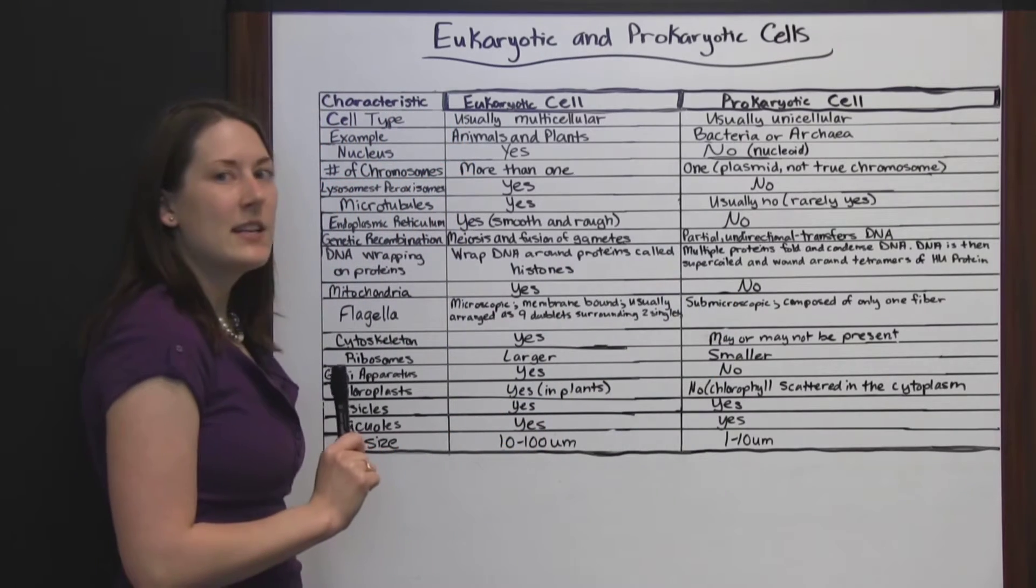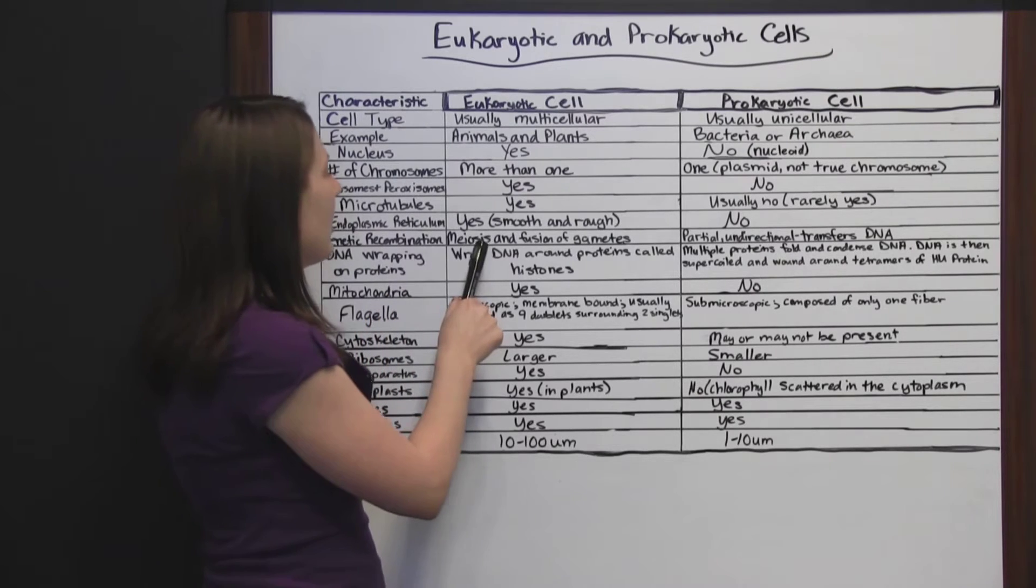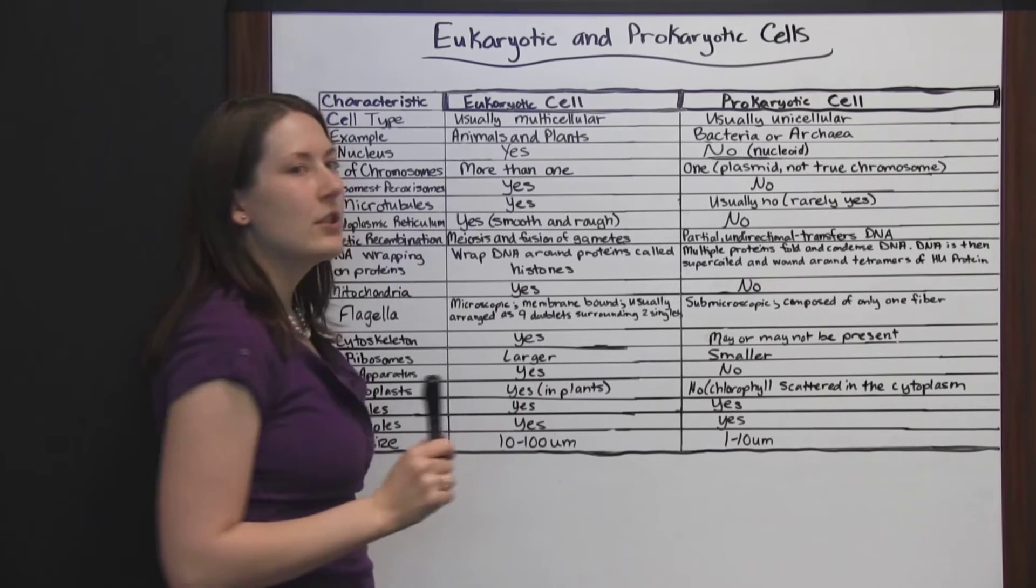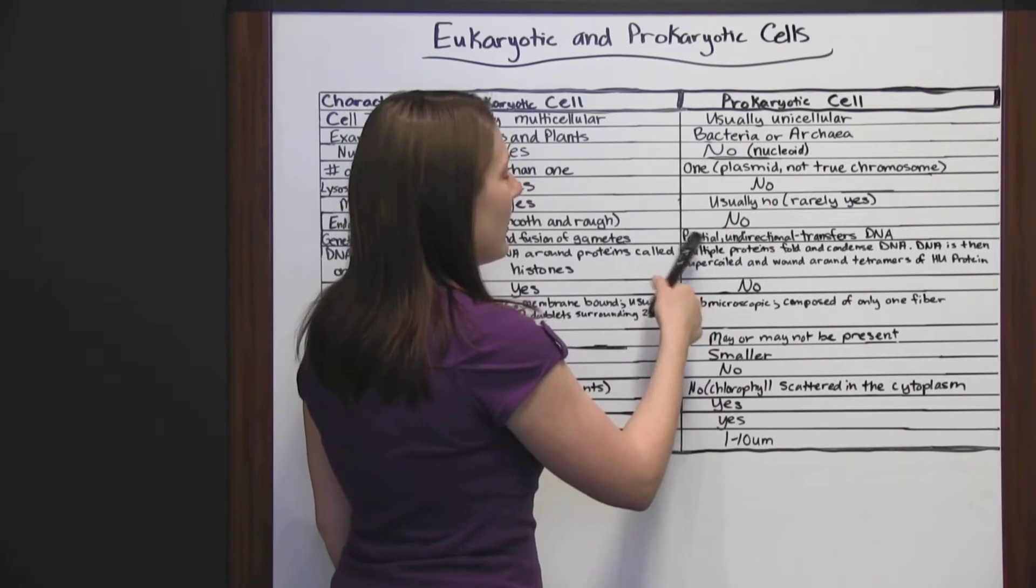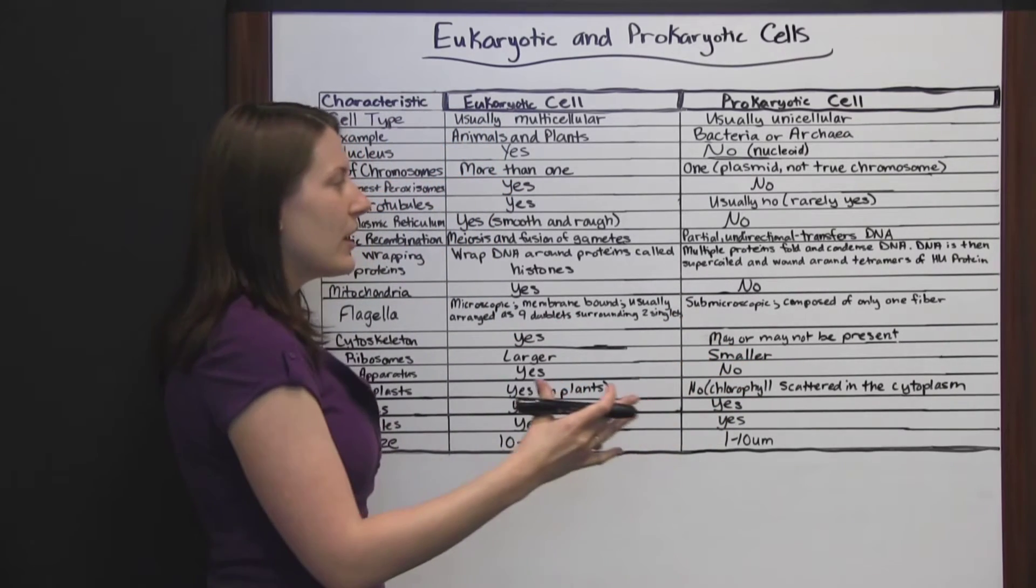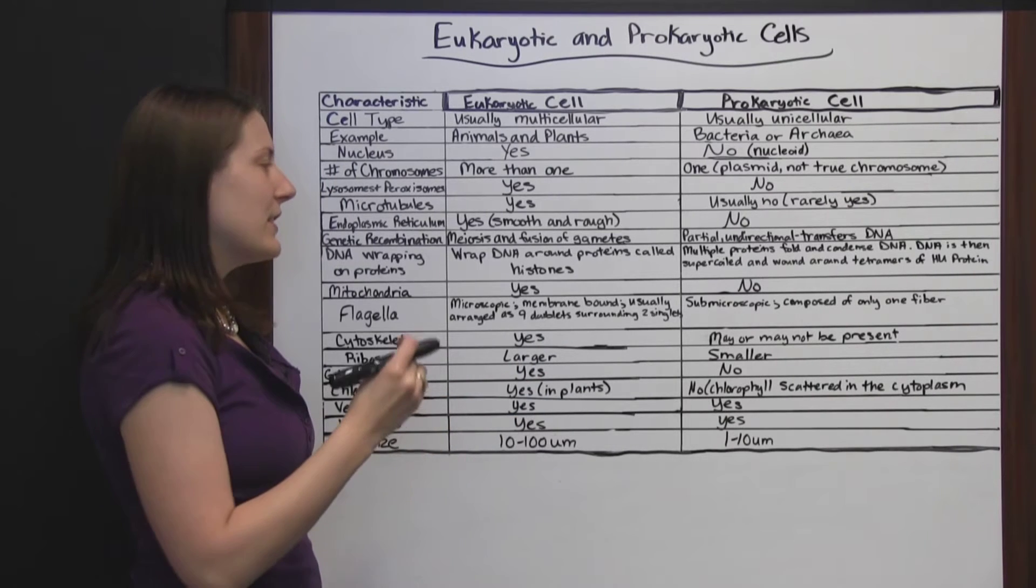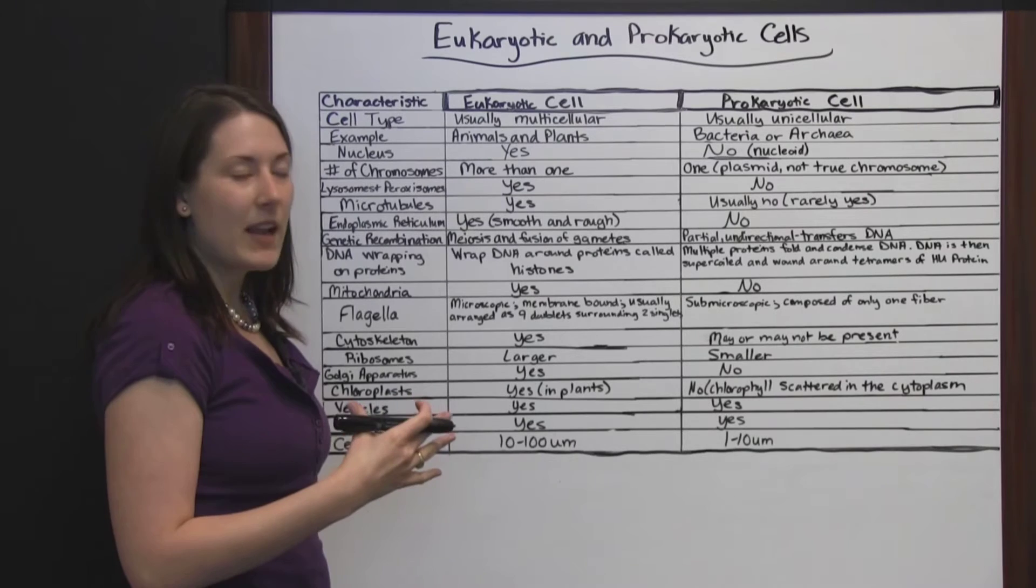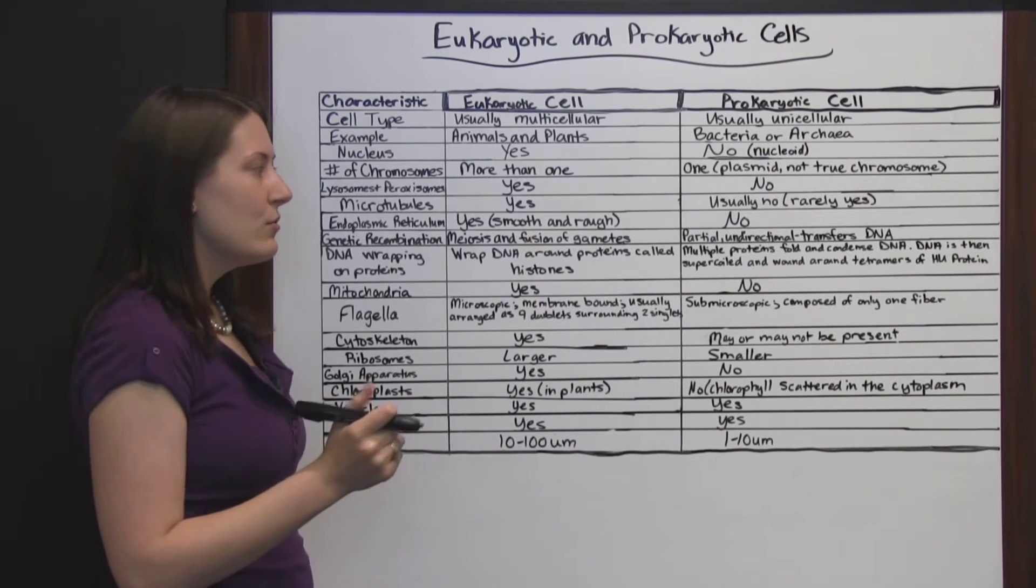Prokaryotic cells do not have an endoplasmic reticulum. Genetic recombination. Eukaryotic cells are going to reproduce by meiosis and the fusion of gametes. Prokaryotic cells, it's partial and undirectional reproduction. It just kind of transfers DNA to another cell, so it isn't as if the cell is splitting and giving half of its DNA matter to something else. It's just transferring some to a new cell.